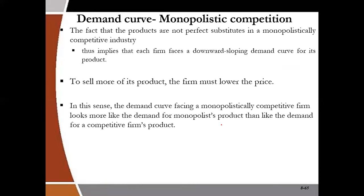Because each firm can distinguish its product from others, they can control the price — they are price makers. That is why iPhone can increase their price, and Samsung, because they all sell differentiated products, also have control over their price like a monopoly. They can decrease their output to increase their price, or decrease their price to increase output. To sell more, they must reduce their price.